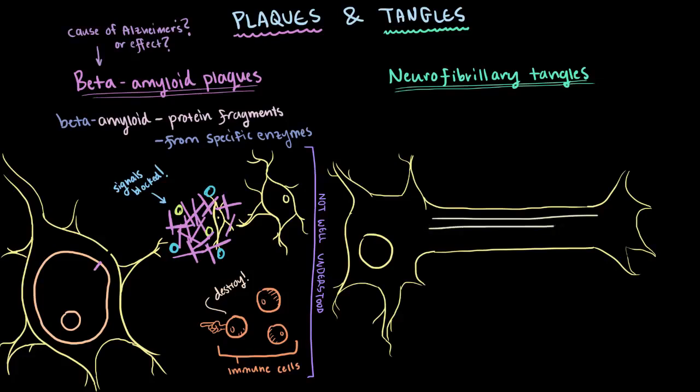So usually healthy neurons are internally supported by, and partly made up of these structures called microtubules. These microtubules are like tracks that guide nutrients and other molecules from the cell's body down to the cell's axon, which is usually connected to another neuron, and this is basically how the neighboring neurons communicate.